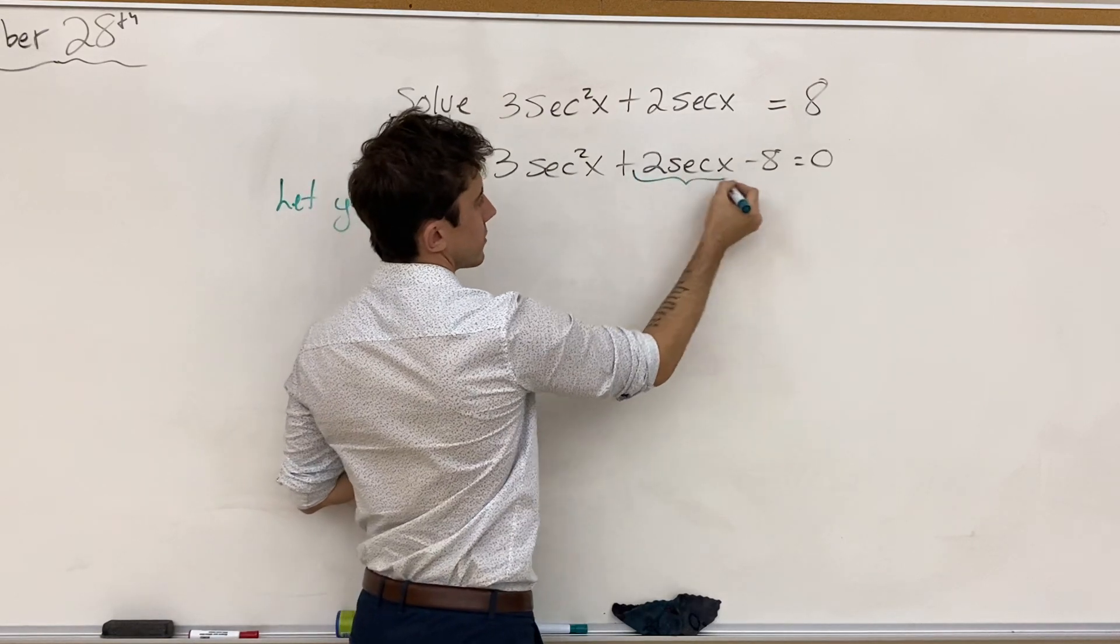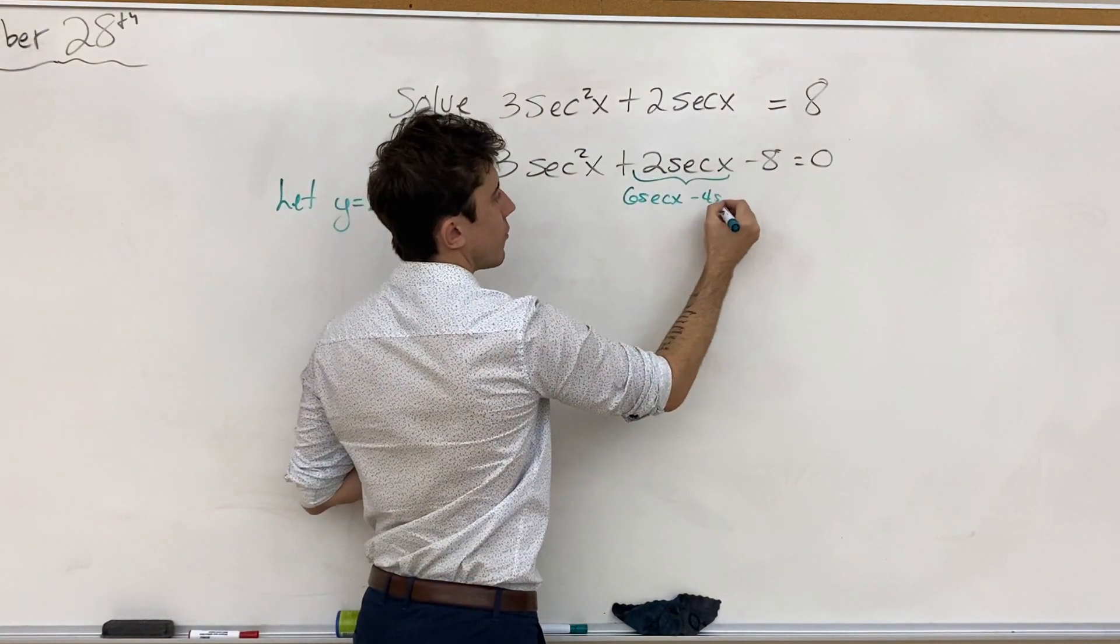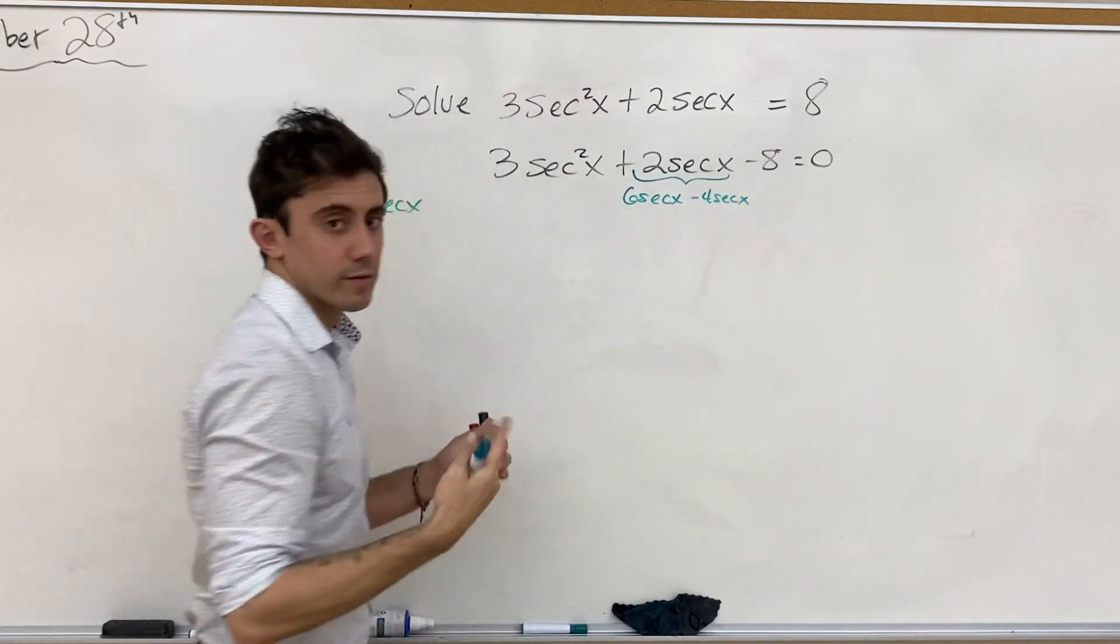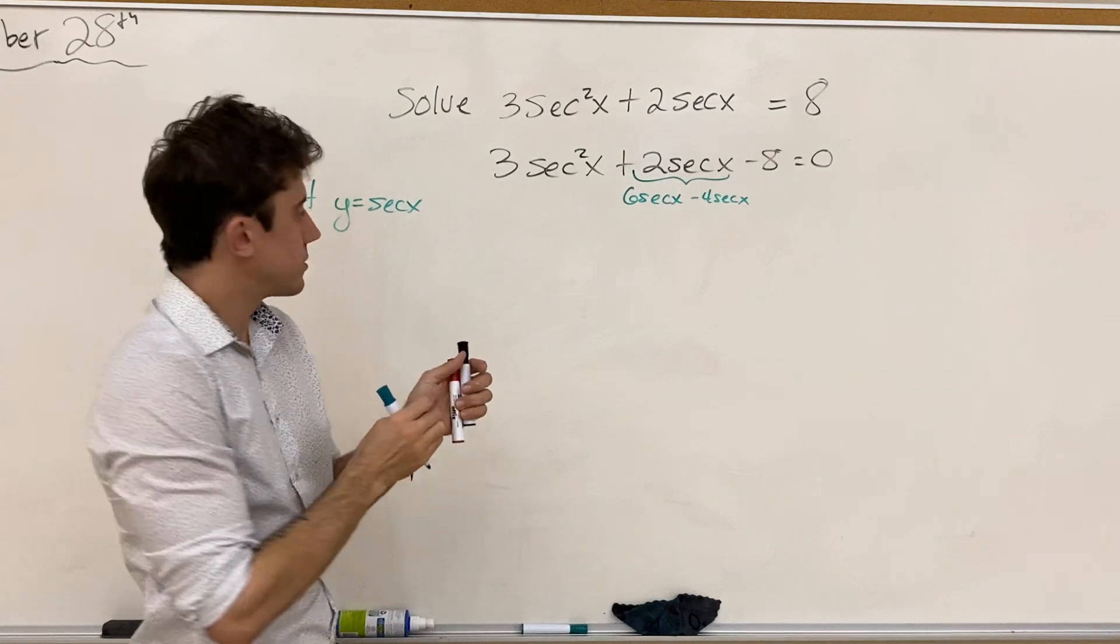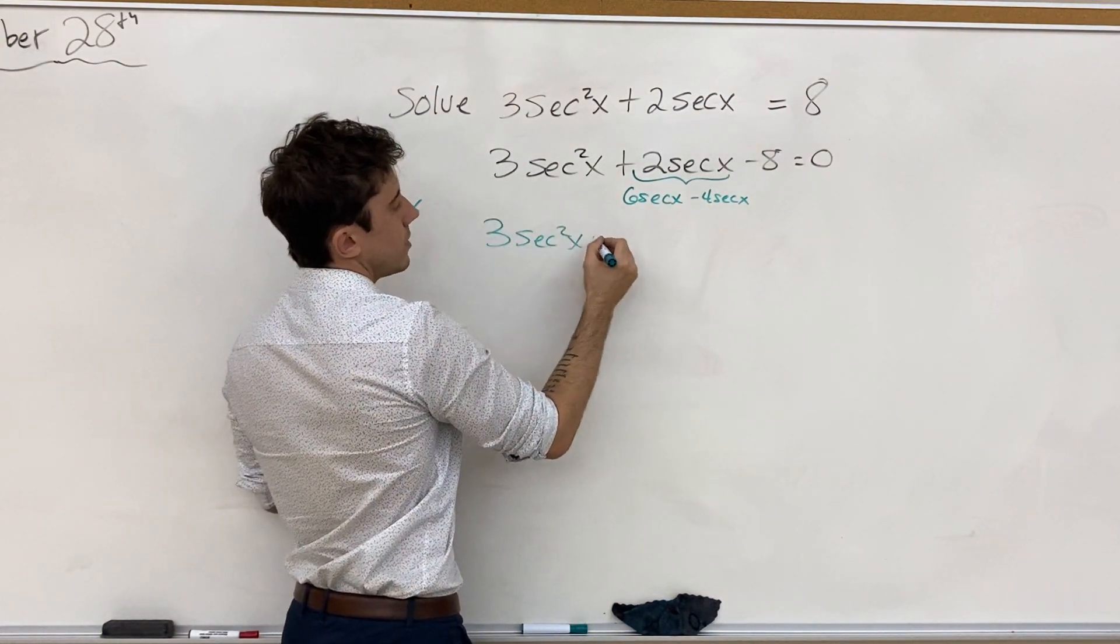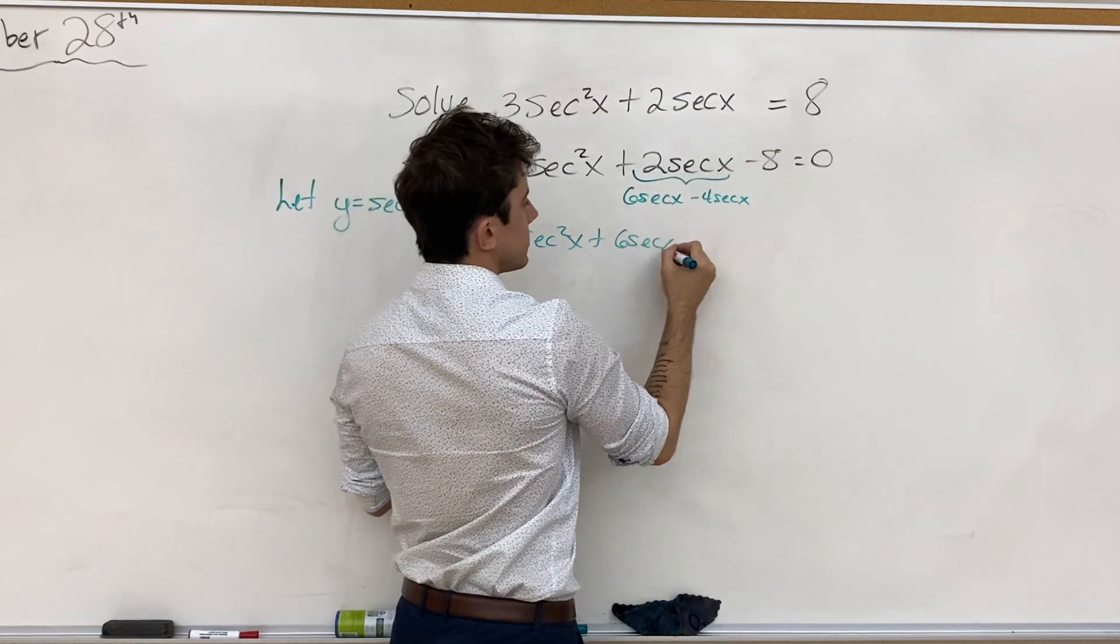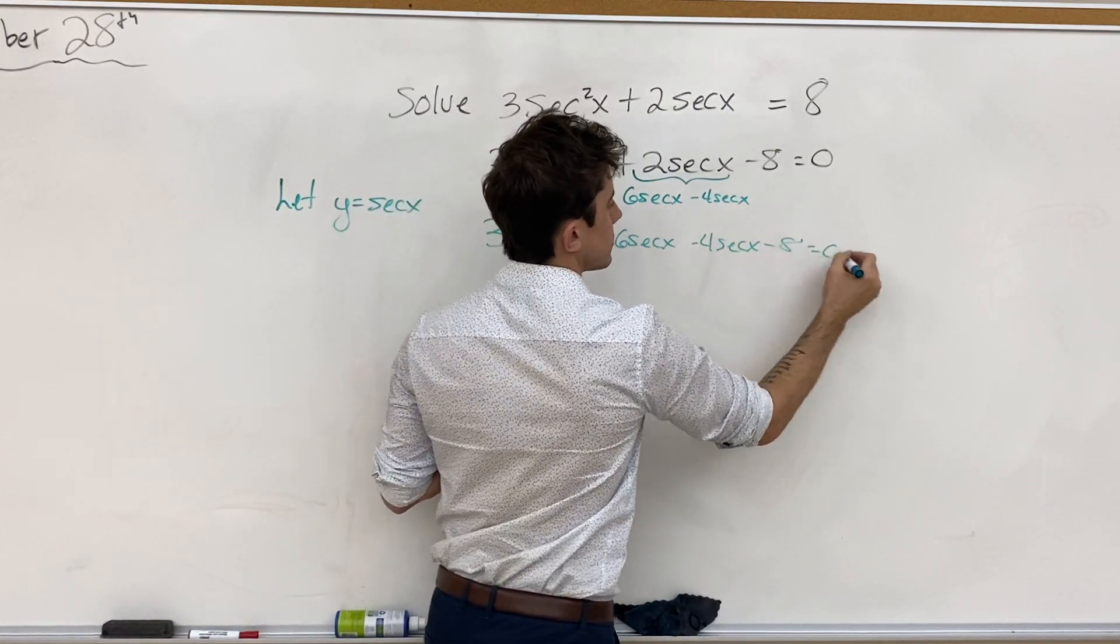And so we're going to decompose this middle term as 6 secant x minus 4 secant x, the same that we always do in our decomposition factoring. And so now we have 3 secant squared x plus 6 secant x minus 4 secant x minus 8 is equal to 0.